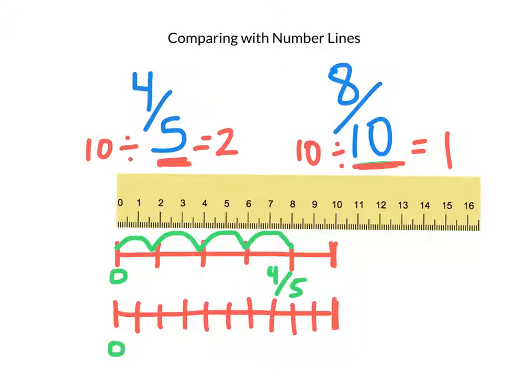And starting on the bottom one, I want to represent 8/10. So starting at 0: 1 hop, 2, 3, 4, 5, 6, 7, 8. This number line, or this line represents 8/10. And guess what? 4/5 and 8/10 are equal. They go to the same spot.